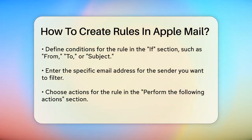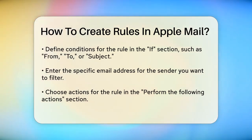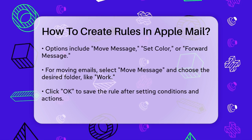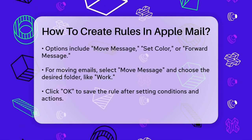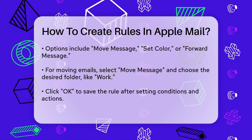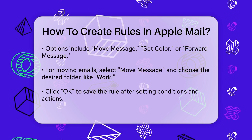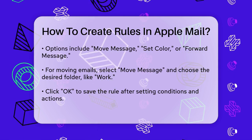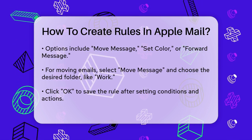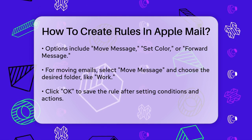Next, you need to specify what action you want Apple Mail to take when it finds an email that matches your condition. In the Perform the Following Actions section, you can choose actions like Move Message to a specific mailbox, Set Color of the message, or even Forward Message to another email address.